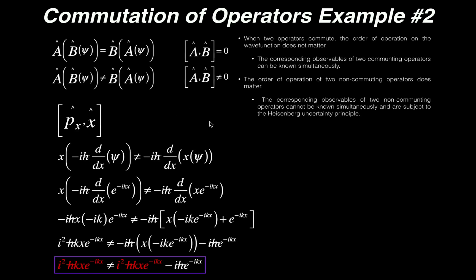Now we operate first with position and then with momentum. Operating with position first just means multiplying x by the wave function, giving x times e to the minus i k x. Then we apply the momentum operator, which means differentiating with respect to x. This time we have a product of x and e to the minus i k x — both functions of x — so we need the product rule in addition to the chain rule.